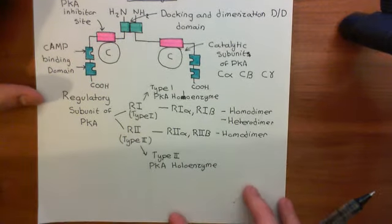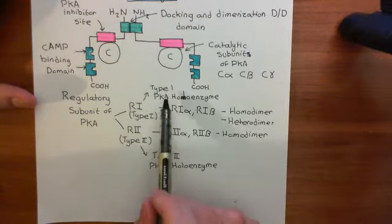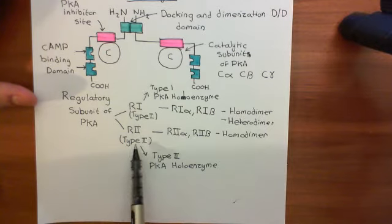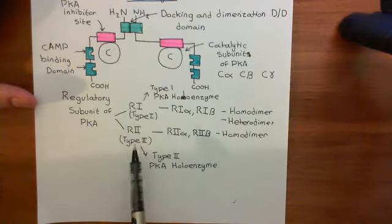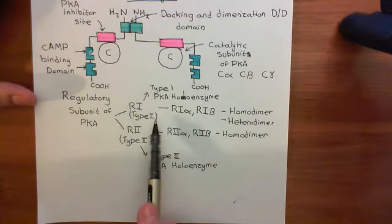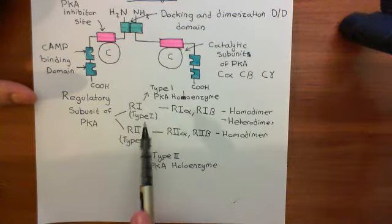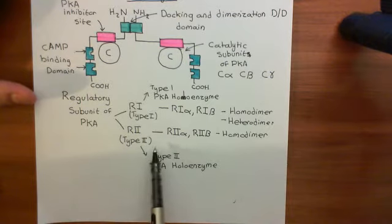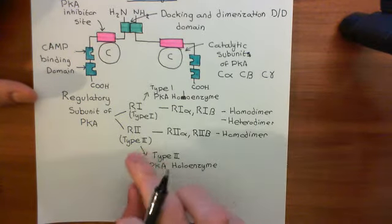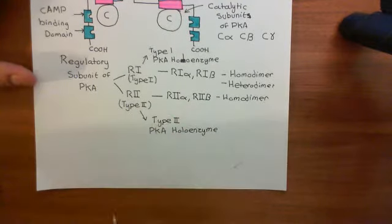What I want to begin with is the functional significance between type 1 protein kinase A holoenzymes, where the regulatory subunit dimer is made up of type 1 regulatory subunits, and type 2 protein kinase A holoenzymes. Basically, type 1 protein kinase A holoenzymes are going to be free within the cytoplasm because the type 1 regulatory subunits don't have a very high affinity for proteins which bind them to the membrane. Whereas type 2 protein kinase A holoenzymes have a much higher affinity for certain proteins which can attach them to the cell membrane or membranes of organelles.